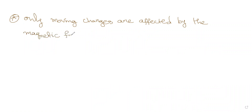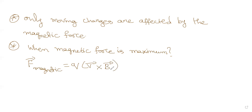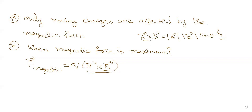Now let's observe when the magnetic force is maximum. F-bar magnetic is given by q into v-bar cross B-bar. This cross product must be maximum. The cross product is defined as: A-bar cross B-bar equals mod A-bar into mod B-bar into sine of the angle between them, times n-cap, where n-cap is the unit vector along A-bar cross B-bar.